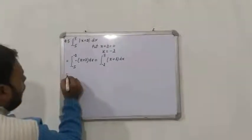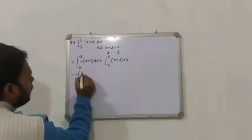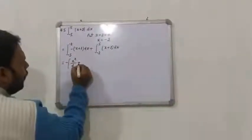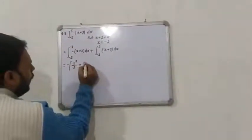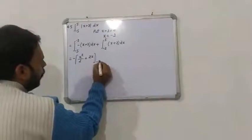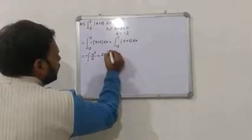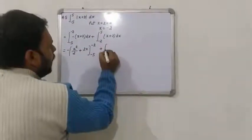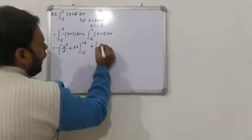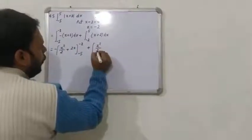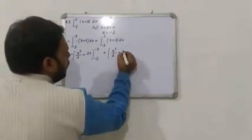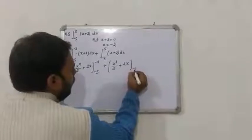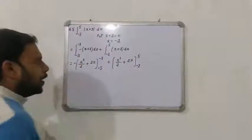−5 سے −2 تک function minus میں ہوگا: −(x + 2) dx. اور −2 سے 5 تک plus میں: +(x + 2) dx. x کا integral x²/2, اور 2 کا integral 2x. Limit −5 سے −2، plus x²/2 + 2x limit −2 سے 5.